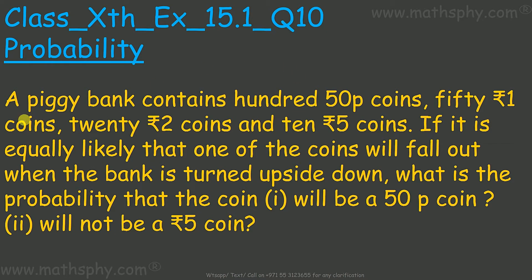A piggy bank contains 150 paisa coins, 50 one-rupee coins, 20 two-rupee coins, and 10 five-rupee coins. If it is equally likely that one of the coins will fall out when the bank is turned upside down, what is the probability that the coin will be a 50-paisa coin, or will not be a 5-rupee coin?